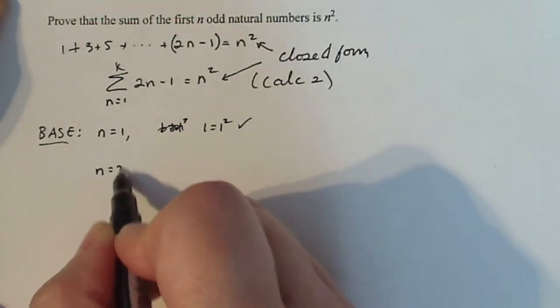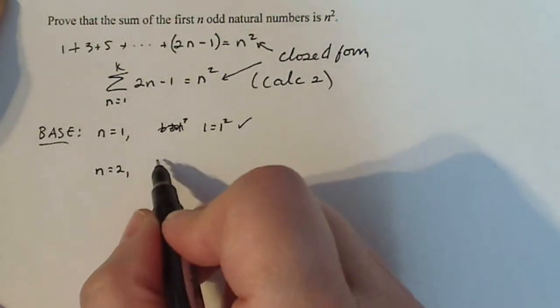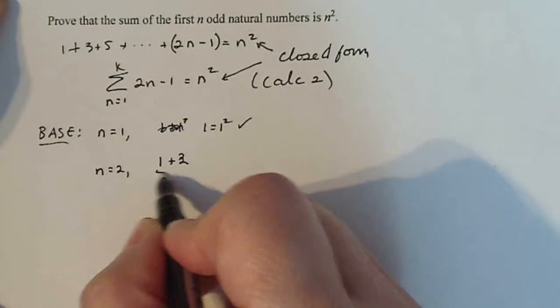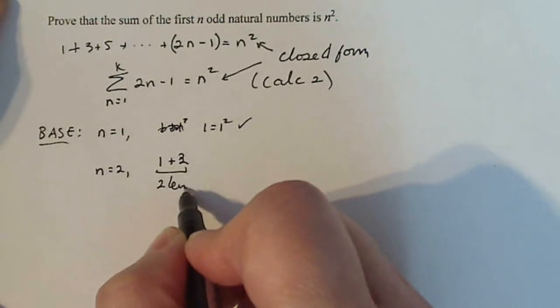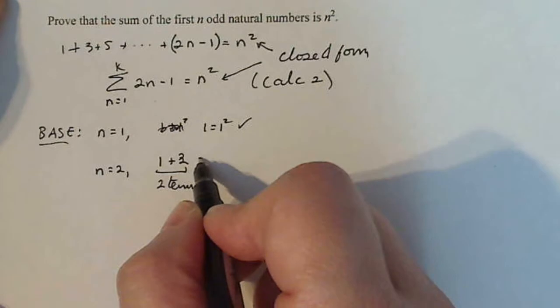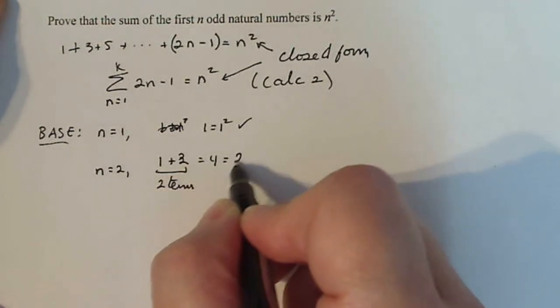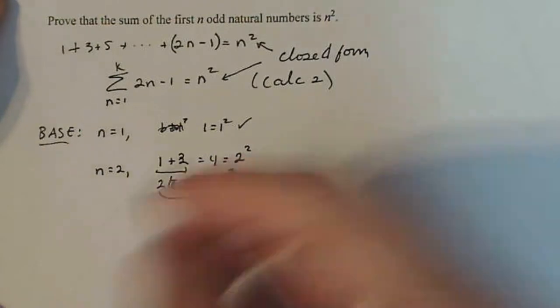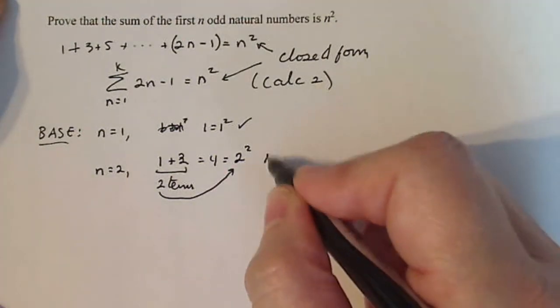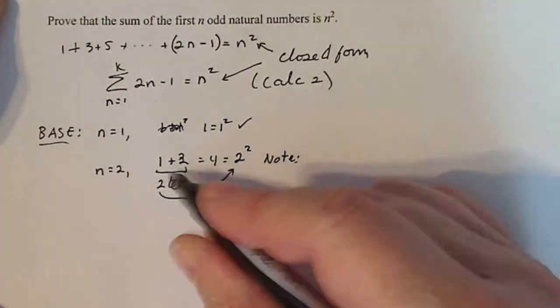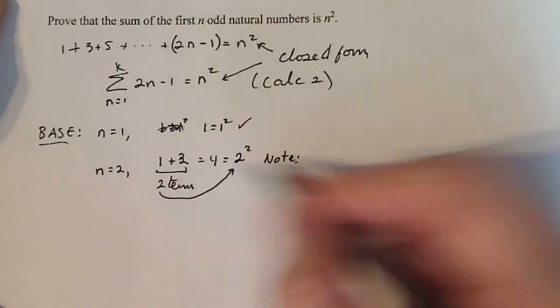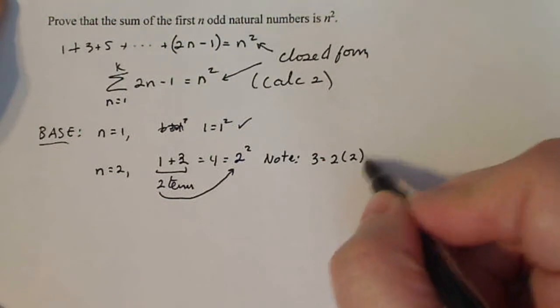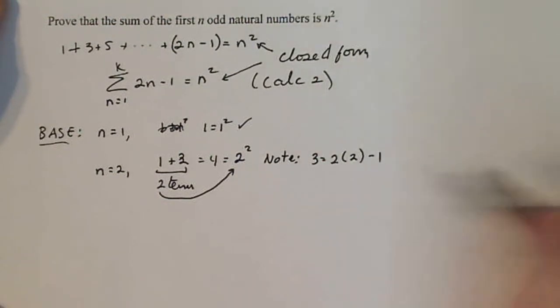Let's do n = 2 though. If n = 2, that means I'm adding the first two odd numbers. So two terms here. That's equal to 4, which is equal to 2 squared. Now that 2 is from the terms. And note that last odd number there, 3, is equal to 2 times my n minus 1.